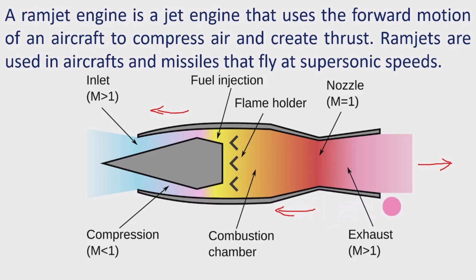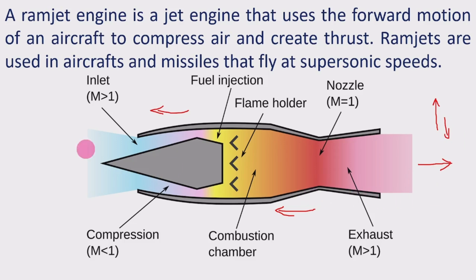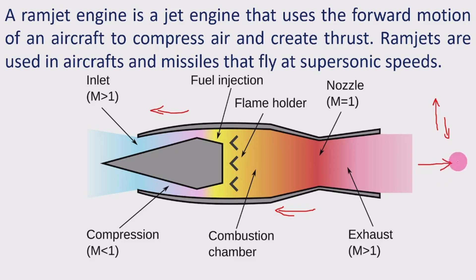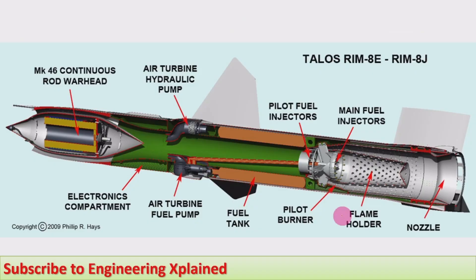An example: like a balloon filled with air — when you release its mouth, the balloon moves upward by flowing air downward. Similarly, here the gas coming out is at supersonic speed, so the engine moves forward at supersonic speed. The working principle is Newton's third law: action and reaction are equal and opposite. The action is gas flowing out of the nozzle; the reaction is the opposite forward motion of the Ramjet engine.